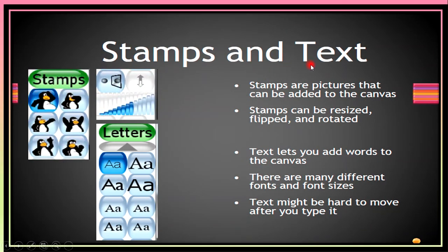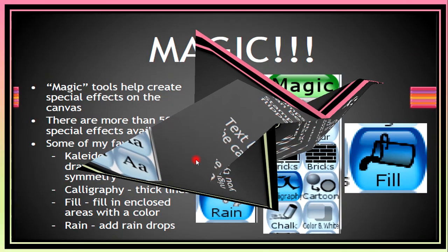Stamps and Text. Stamp tools are pictures that can be added to the canvas. Stamps can be resized, flipped, and rotated. Text lets you add words to the canvas. There are many different fonts and font sizes. Text might be hard to move after you type it.